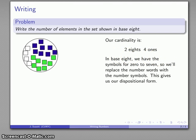They may think it's a little strange how we're expressing it, but if you go up to somebody on the street and say 'I have two eights and four ones,' once they figure you're talking about a numerical quantity, they'll understand what you're looking at. So there's our dispositional form.